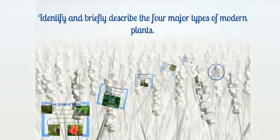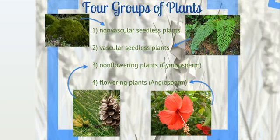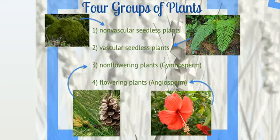Identify and briefly describe the four major types of modern plants. The four groups of plants are non-vascular seedless, vascular seedless, non-flowering plants which are gymnosperms, and flowering plants which are angiosperms.